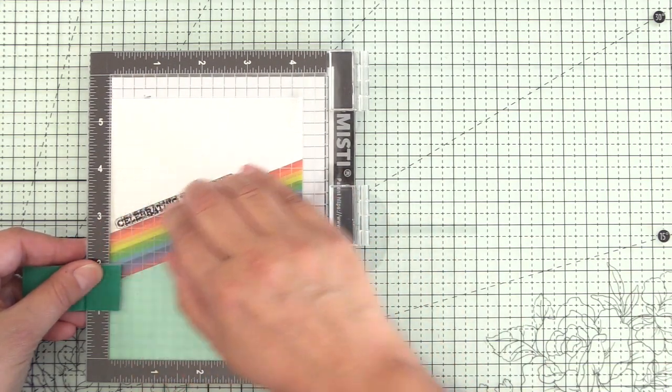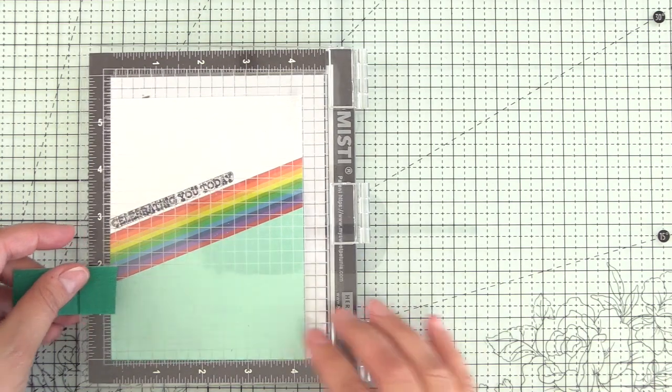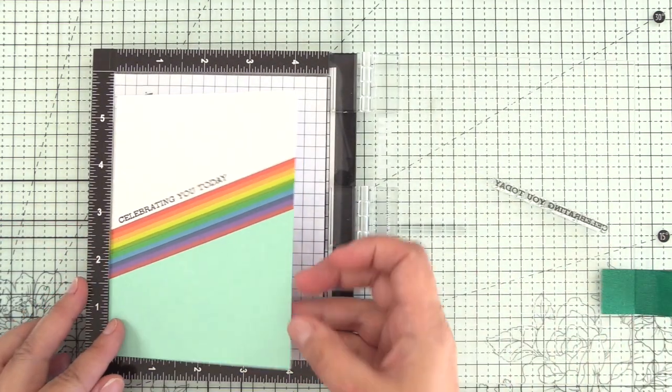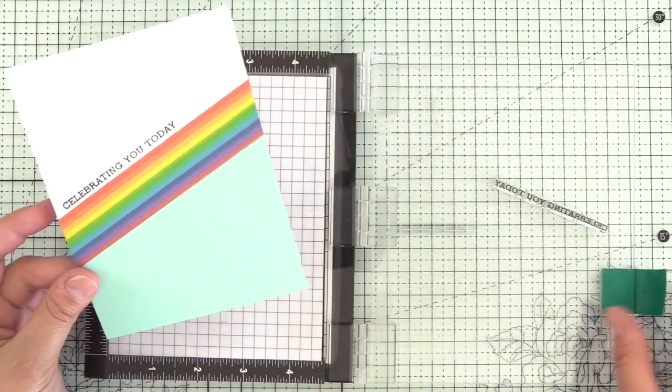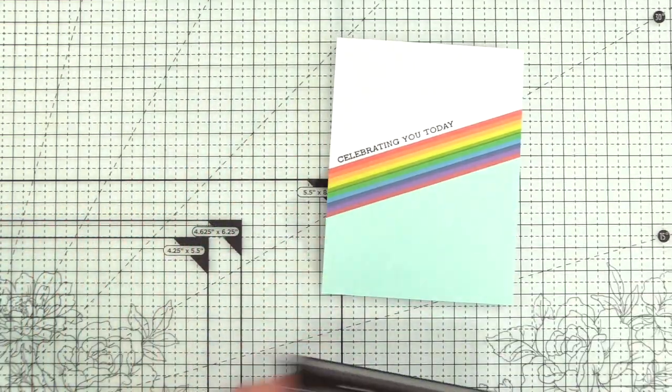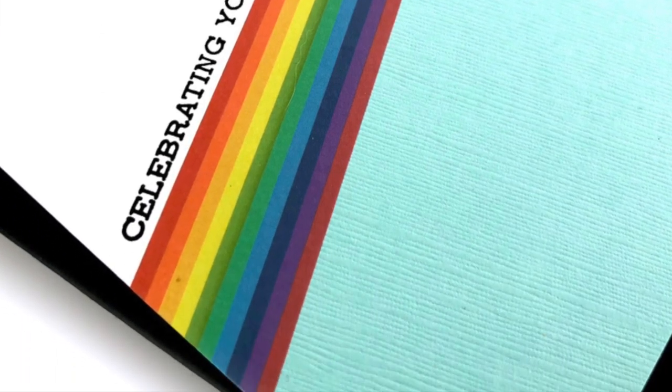And last thing is I'll just add a sentiment from sentiment strips two with the obsidian pigment ink. And that card is done. I'm not even going to embellish it. That's it. Just clean, simple, super quick to make. You guys, you could make so many cards that way with so many different occasions, really easy.